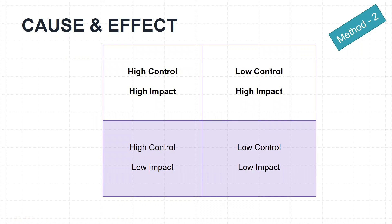The second method is the cause and effect approach using a control-impact matrix. If you have low control and low impact, don't pursue it. High control but low impact — too much effort for little return. High control and high impact — acceptable. But the wisest choice is low control and high impact: you put in less effort and the impact is great.